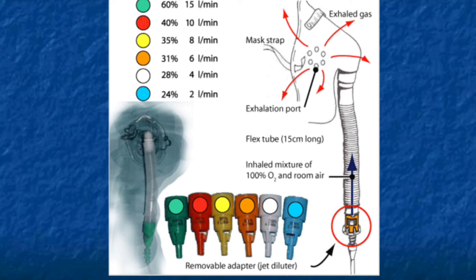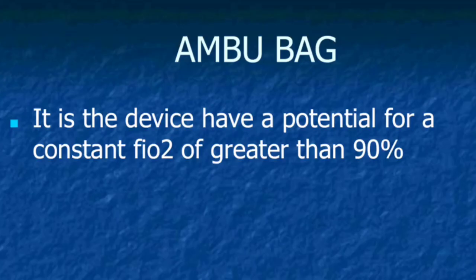Green is 60% FiO2 with 50 liters per minute O2. Red is 40% FiO2 with 10 liters per minute O2. Yellow is 35% FiO2 at 8 liters per minute O2. Orange is 31% FiO2 with 6 liters per minute O2. White is 28% FiO2 with 4 liters per minute O2. Blue is 24% FiO2 with 2 liters per minute O2.